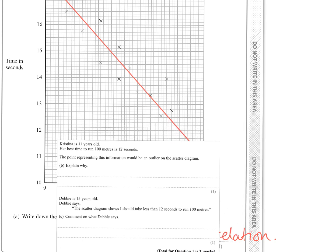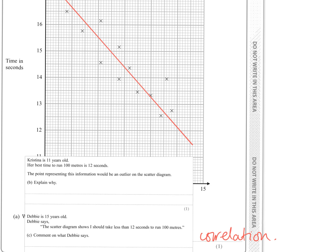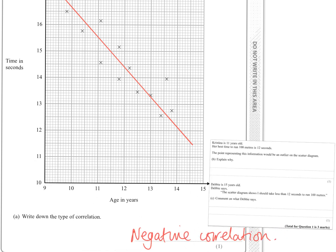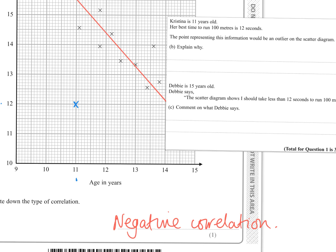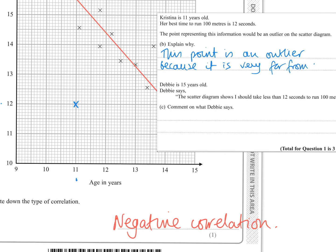Part B says Christina is 11 years old and her best time to run a hundred metres is 12 seconds. The point representing this information would be an outlier on the scatter diagram — explain why. Let's put it on first: she's 11 years old and runs it in 12 seconds, so the point is here. The explanation is that this point is far away from our line of best fit.